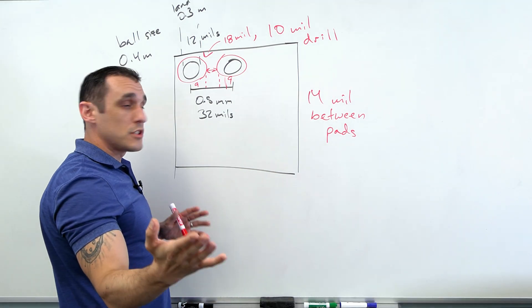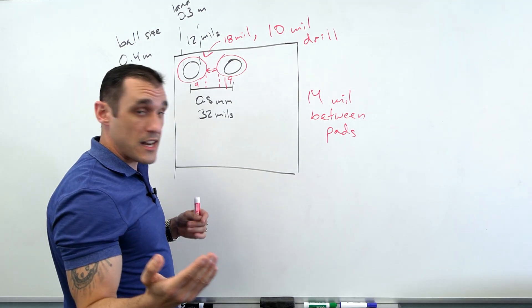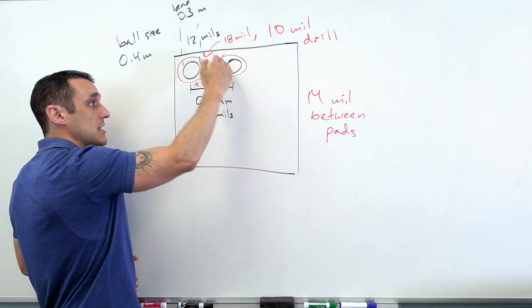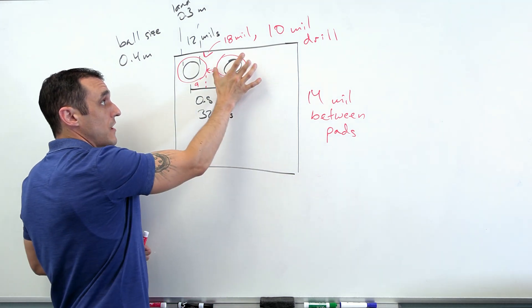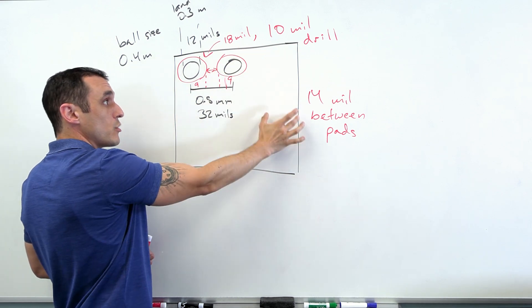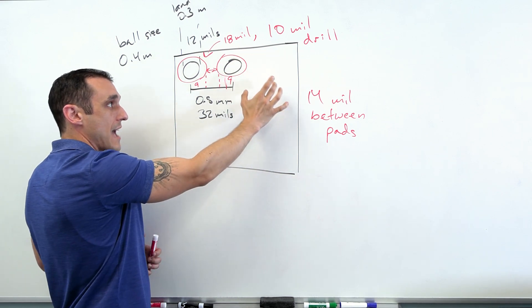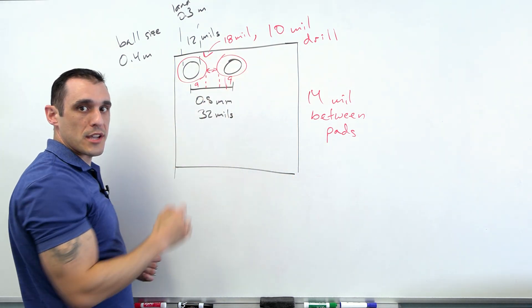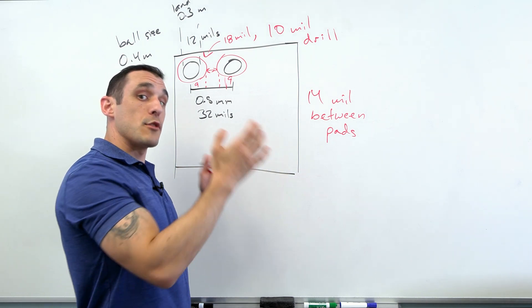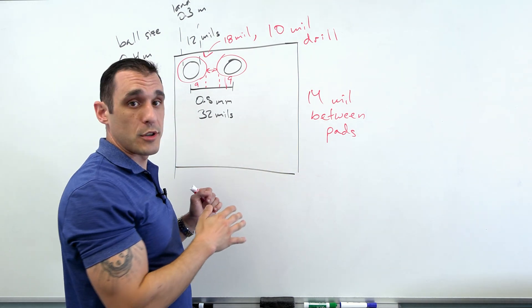Now, what you could also do to figure out if you could do a dog bone fan out is you could actually look at the diagonal spacing between pads, and then you could try and fit one of these pads in between those two balls diagonally. And the reason you do that is so that you can ensure you can fit that entire pad there and then route a trace in for a dog bone fan out. So that would be the other way to do this type of component.